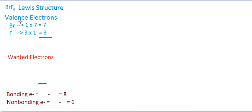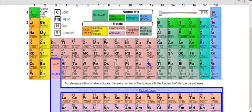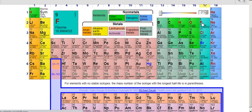We're going to construct the Lewis structure of bromine pentafluoride, BrF5. First we should go to the periodic table and see where bromine and fluorine are. They're both halogens.